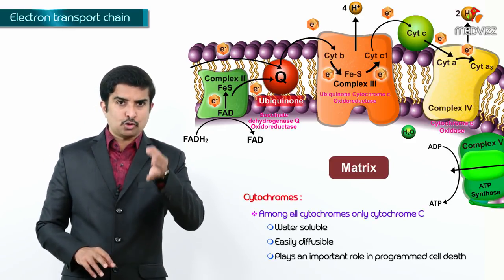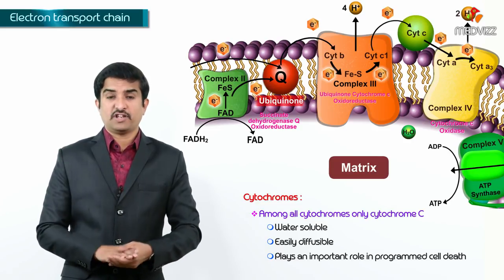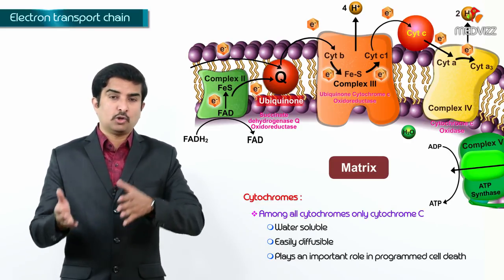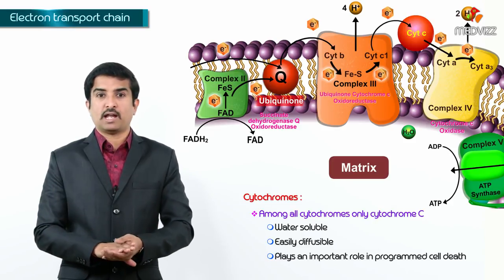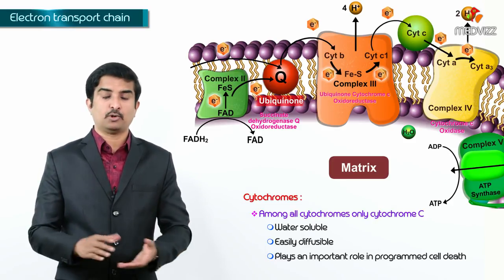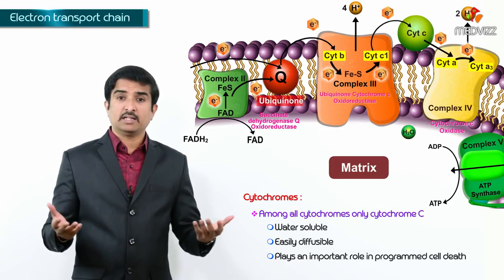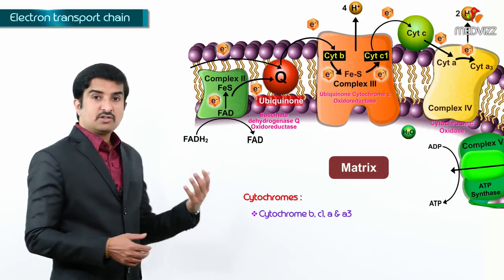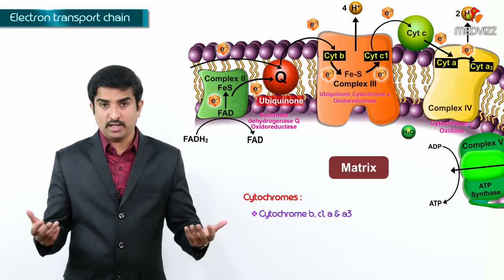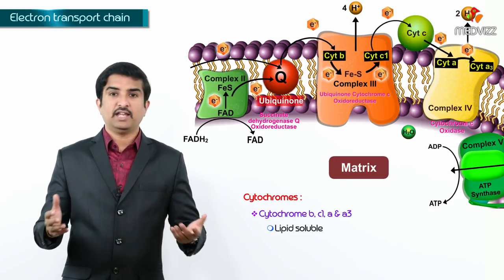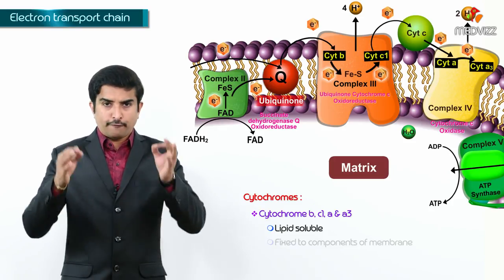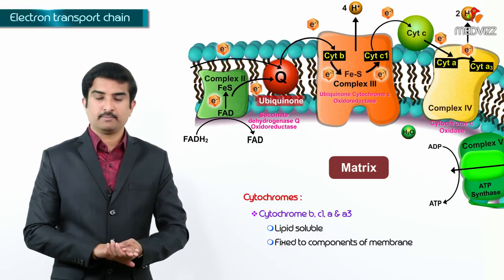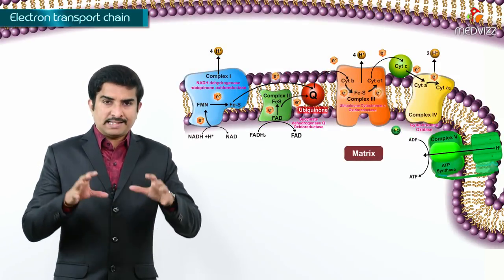Among the cytochromes, only cytochrome C is water soluble, making it easily diffusible. It also plays an important role in apoptosis. The other cytochromes — B, C1, A, and A3 — are lipid soluble and are fixed to the components of the inner mitochondrial membrane.